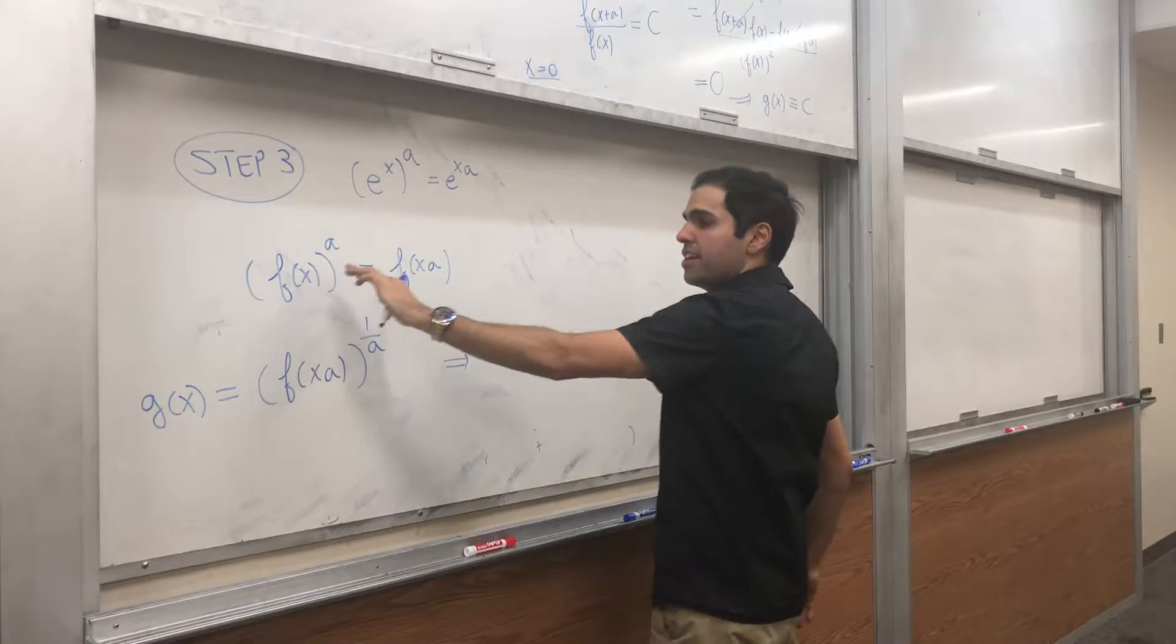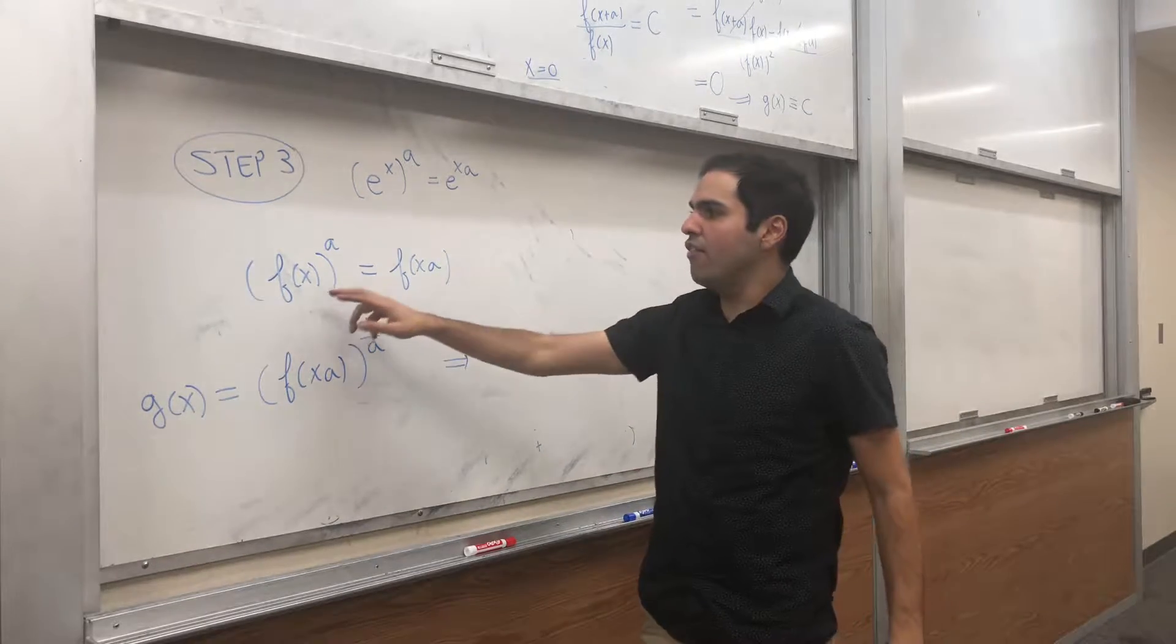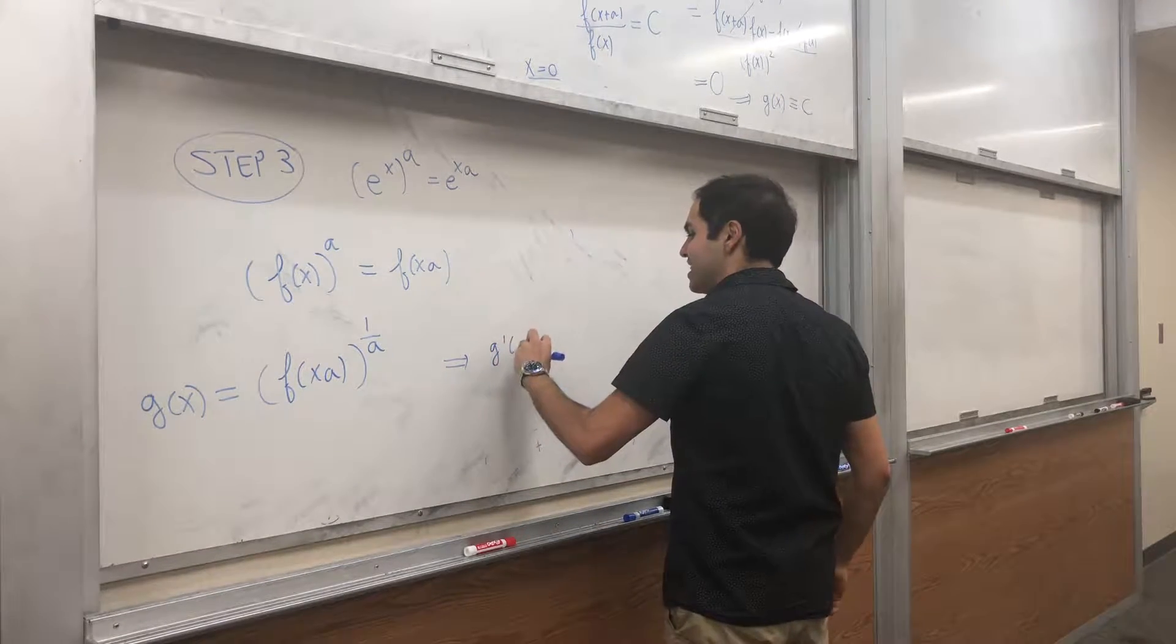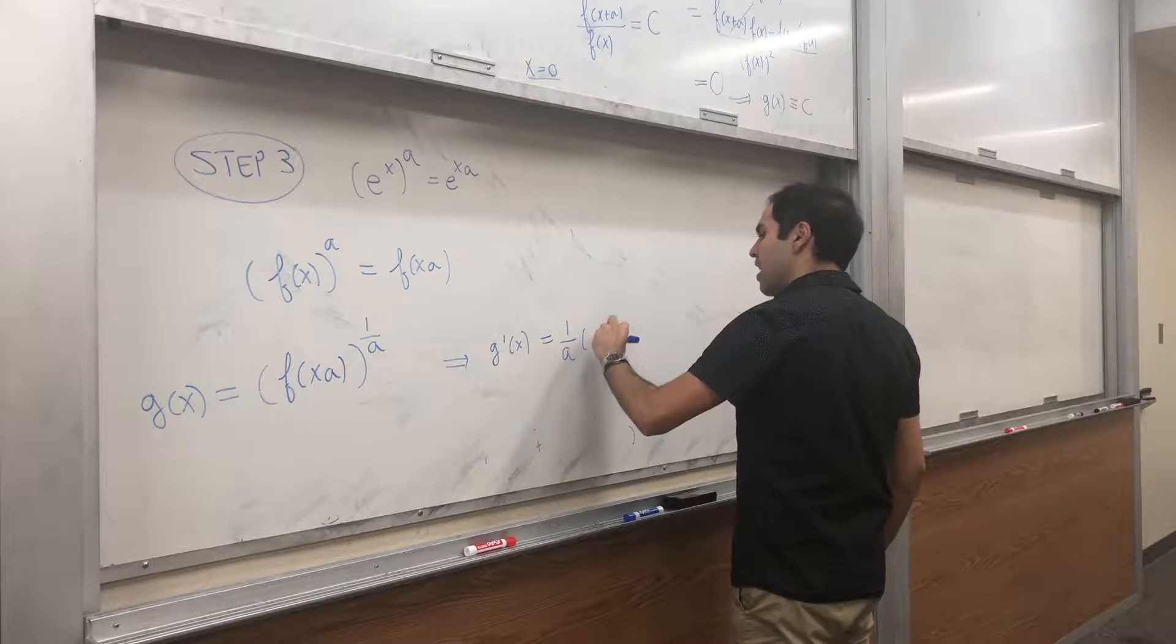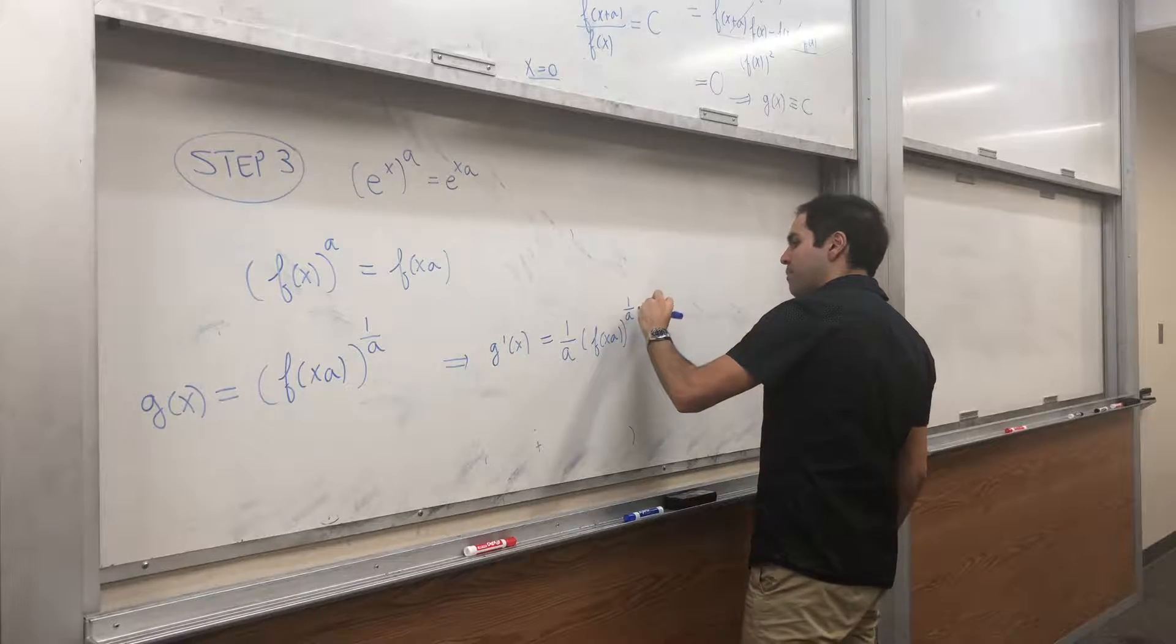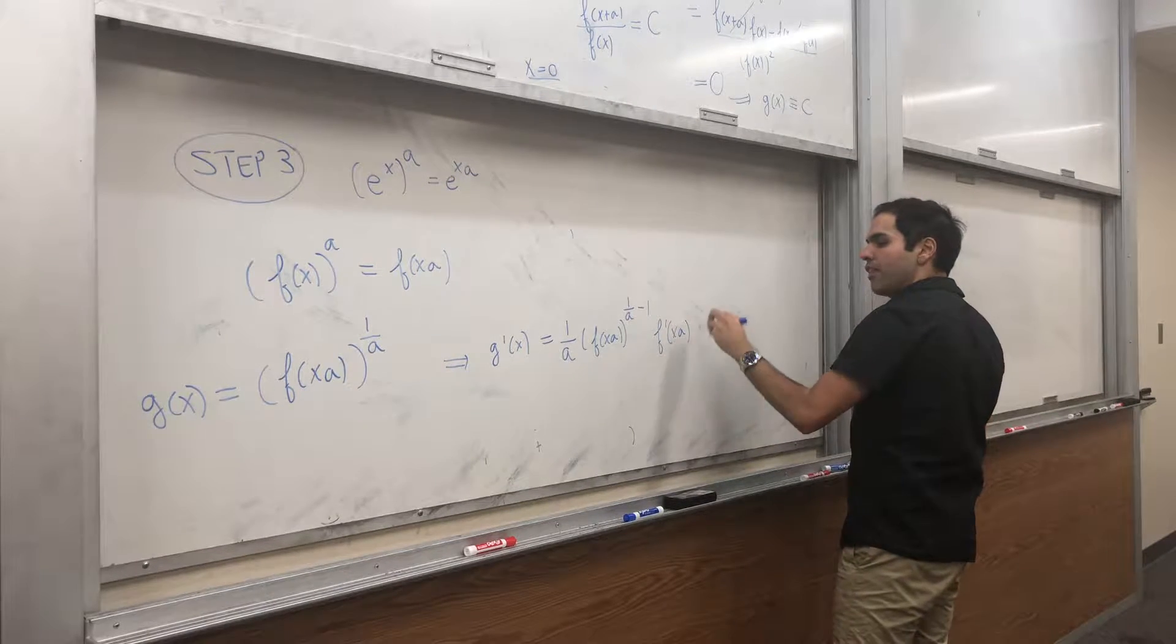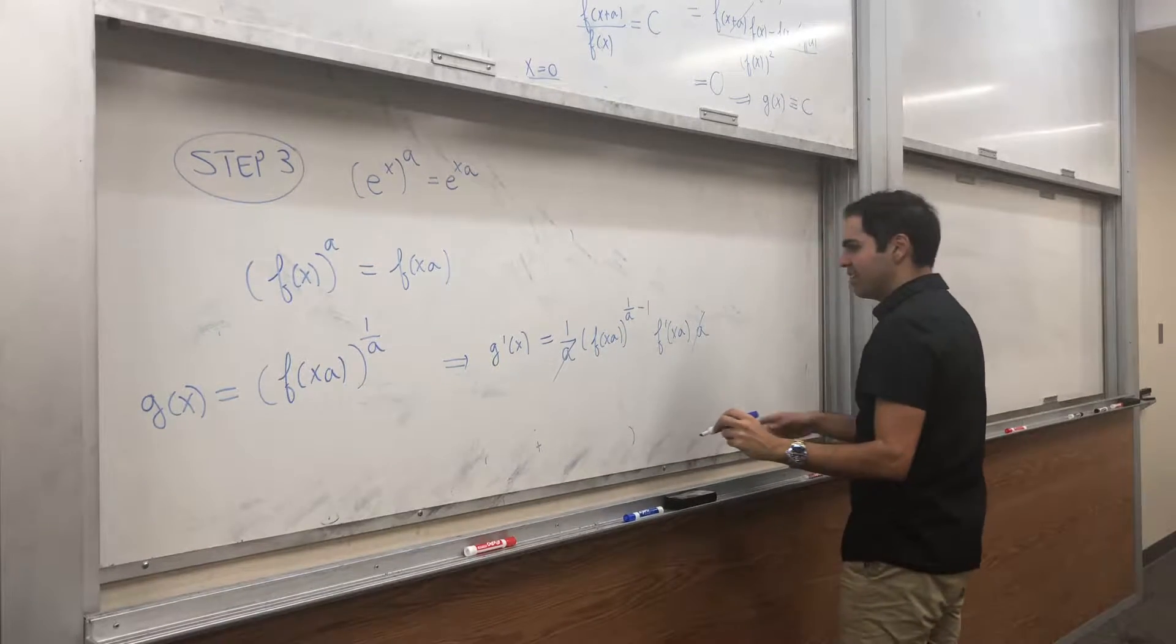And by the way, this is not an exponential. This is not like two to the x. I'm just taking f of x and raising it to a fixed power. So, it's just a power function. So, there's no contradiction here. So, that g prime of x is one over a, f of x a to the one over a minus one. And then the derivative of that, f prime of x a. And then the derivative of x a with respect to x, which is a. The a's cancel out.